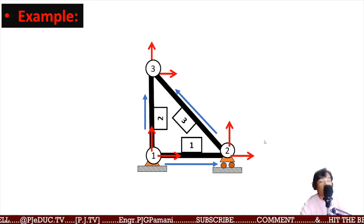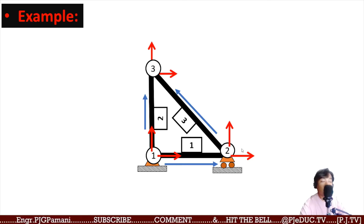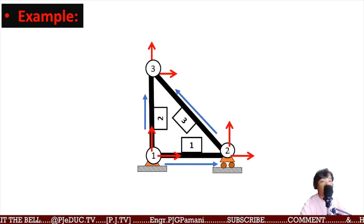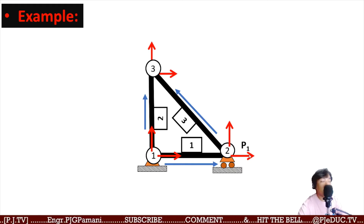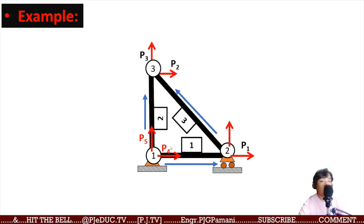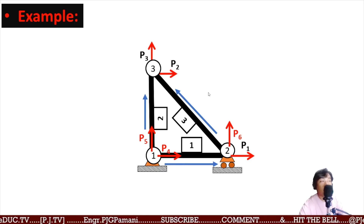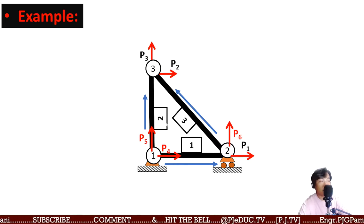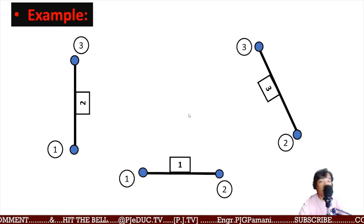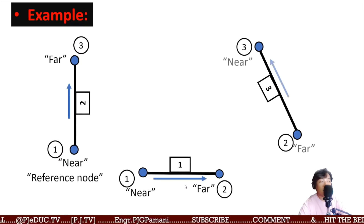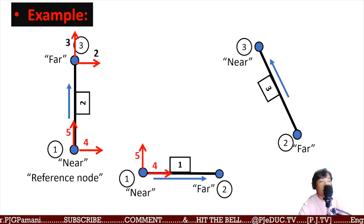Identify the known and unknown axes. The horizontal axis of the roller is known; the horizontal and vertical of joint 3 are unknown; joint 1 is unknown; and the vertical of joint 2 is unknown. Designate unknown forces as P1, P2, P3, P4, P5, and P6. Forces marked in red are unknown; forces marked in black are known. The same applies to deflections — separate your members into known and unknown, identify near-far nodes, and apply axis numbers.